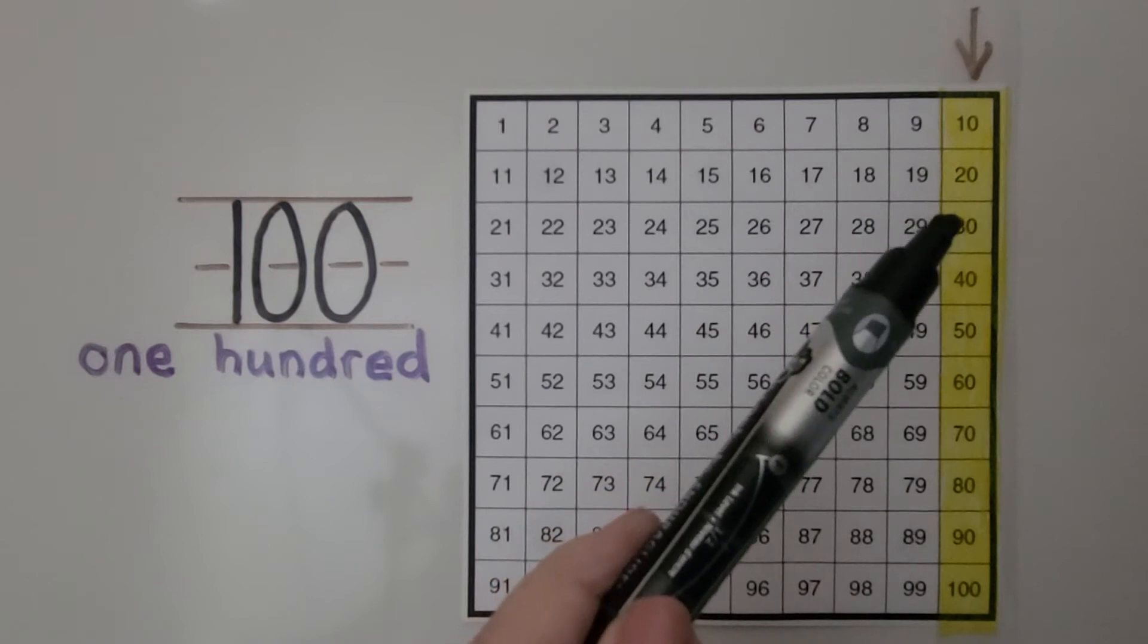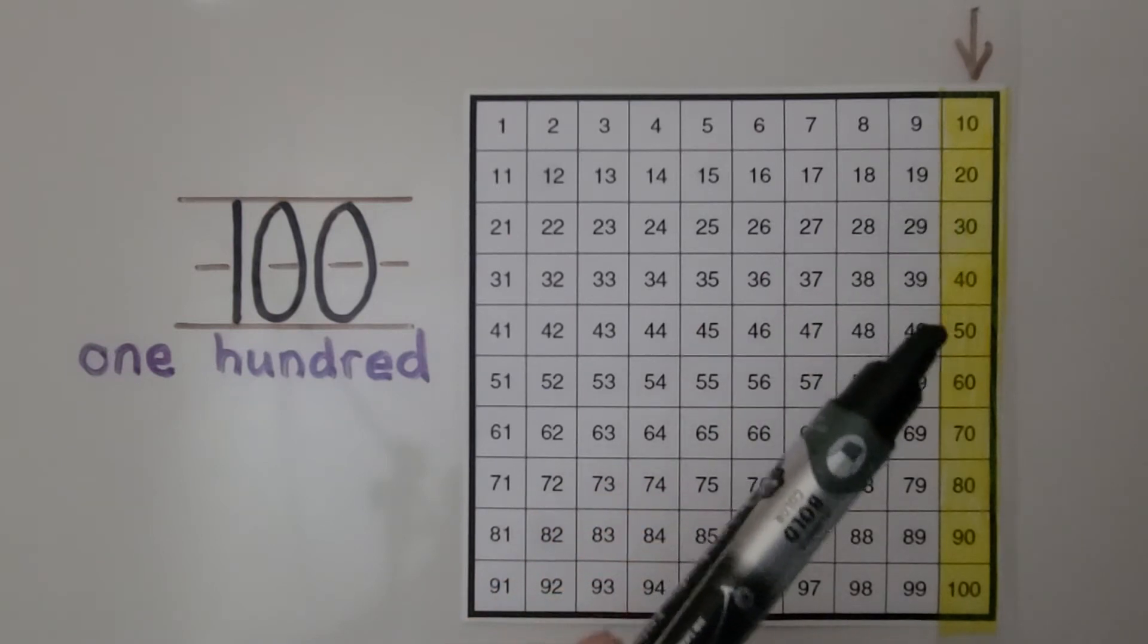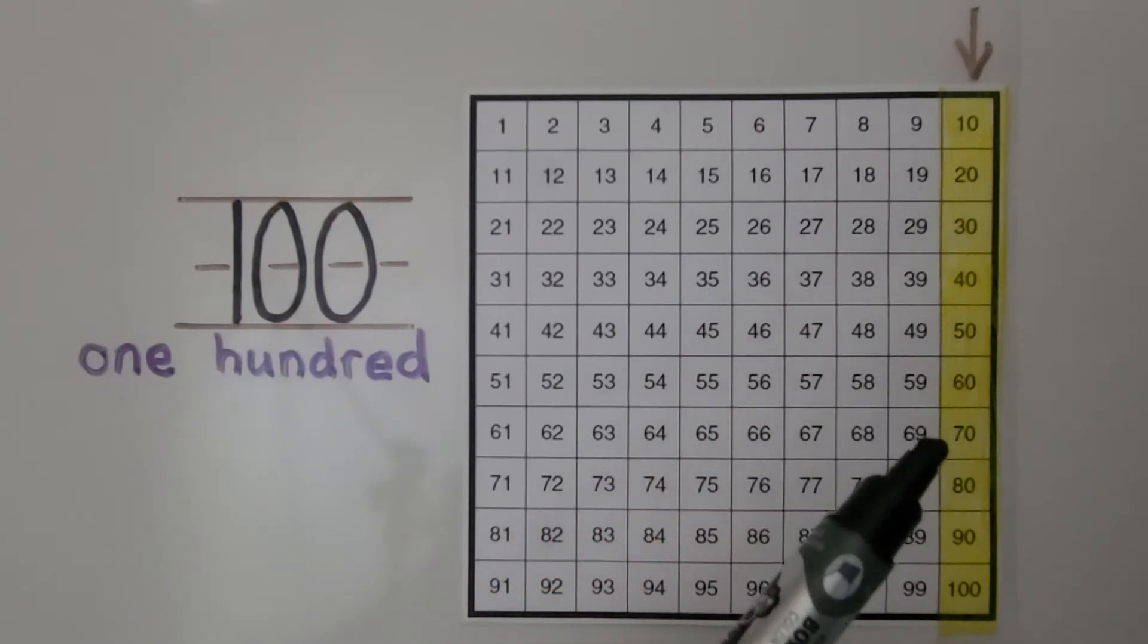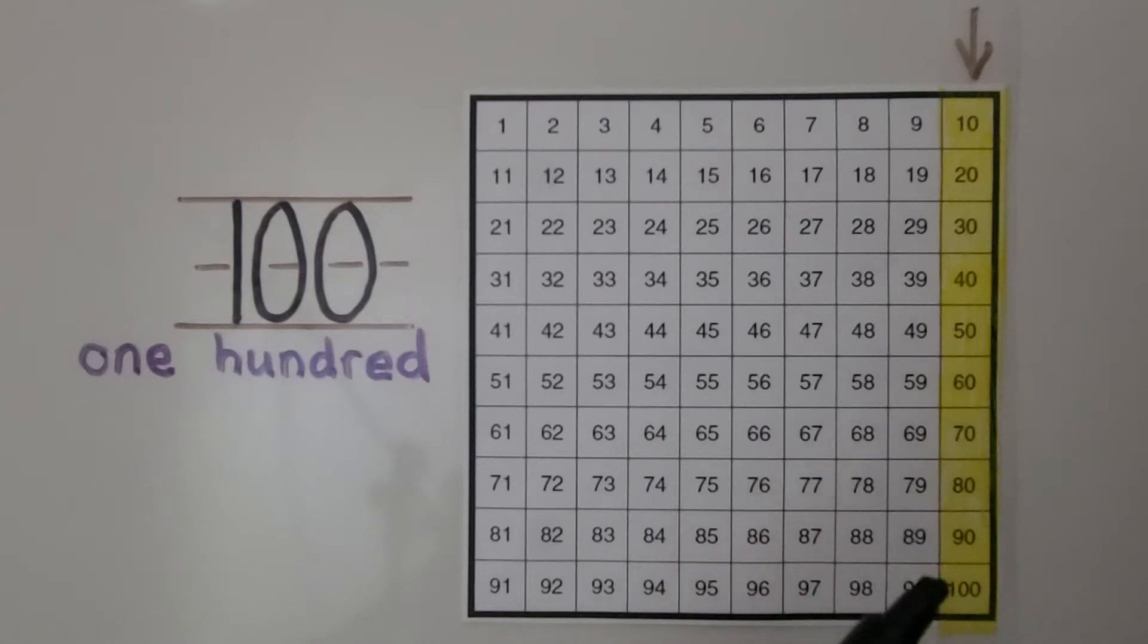And we can count by tens: 10, 20, 30, 40, 50, 60, 70, 80, 90, 100.